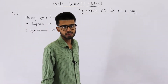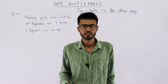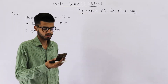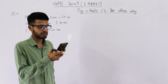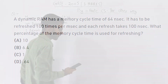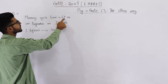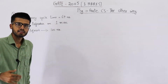Hello students. Here I have a question from the GATE 2005 exam — it's a one-mark question. Let me read out the statement and then we are going to solve it. A dynamic RAM has a memory cycle time of 64 nanoseconds. It has to be refreshed 100 times per millisecond, and each refresh takes 100 nanoseconds. What percentage of memory cycle time is used for refreshing?